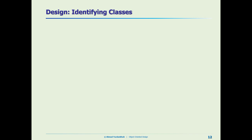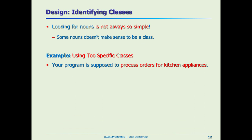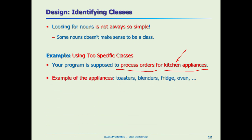We read the functional spec and found the names, but this is not always so simple — sometimes it's very confusing and you cannot judge which one should be a class. This is one example of how if you're not careful about picking the right names, you can make a lot of mistakes. For a kitchen appliances application that processes orders, the functional spec might mention toasters, blenders, fridge, oven.